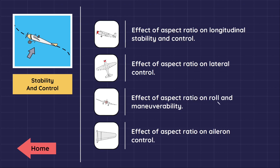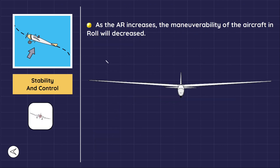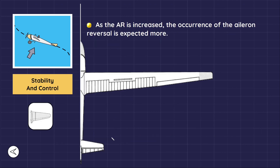Regarding roll and maneuverability, as the aspect ratio increases, the aircraft's mass moment of inertia around the X axis increases, meaning it takes longer to roll, reducing maneuverability. For this reason, a low aspect ratio wing is desired for maneuverable aircraft such as fighters, to enable them to roll as fast as possible. Also, as aspect ratio increases, aileron reversal is more likely to occur, since the wing becomes more flexible and prone to twist under aileron loads, which is undesirable for maneuverable aircraft.